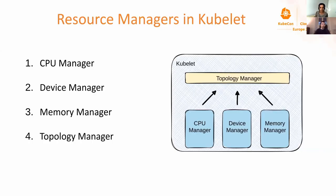For performance-critical workloads, they typically have very strict resource requirements. It is required that resources such as CPU, memory, and devices be allocated from the same NUMA node for optimal performance. From a resource management perspective within kubelet, we have CPU manager, device manager, and memory manager that are responsible for allocating CPUs, devices, and memory or huge pages respectively. Topology manager gathers hints from resource managers and, based on the configured policy, aligns them on the same NUMA node.